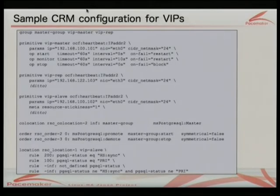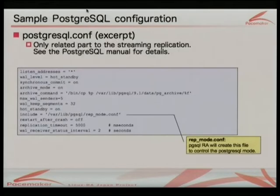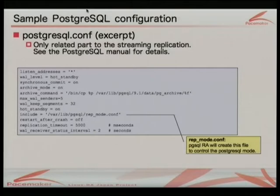This is a sample virtual IP configuration. There are three IPs: vip-master, vip-replication, and vip-slave, along with some constraints. This is the full list of new parameters in the new resource agent, but you don't have to specify all of them. You also have to configure the PostgreSQL database itself to support streaming replication. This shows the part of the PostgreSQL configuration related to replication — the details are in the PostgreSQL manual. One thing you must add is an include line, because the resource agent creates a configuration file to control the PostgreSQL status.